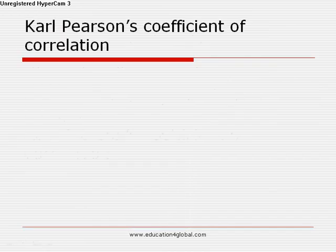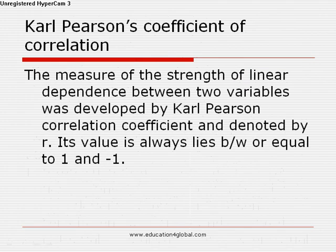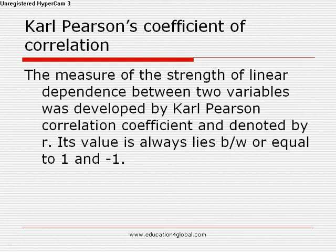Karl Pearson coefficient of correlation is used to find out the linear relationship between variables — how much relation exists between the variables using the linear method. The measure of strength of linear dependence between two variables was developed by Karl Pearson and is denoted by r. Its value always lies between minus 1 and plus 1; the value of r is never greater than 1 or less than minus 1.